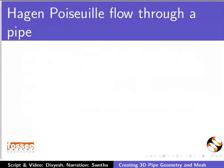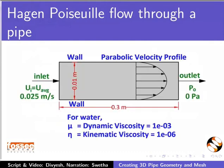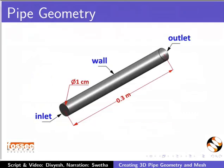In this tutorial, we will learn to create the geometry for Hagen-Poiseuille flow through a pipe. The problem description of Hagen-Poiseuille flow through a pipe is shown in the diagram. This is the diagram of the geometry for Hagen-Poiseuille flow through a pipe.